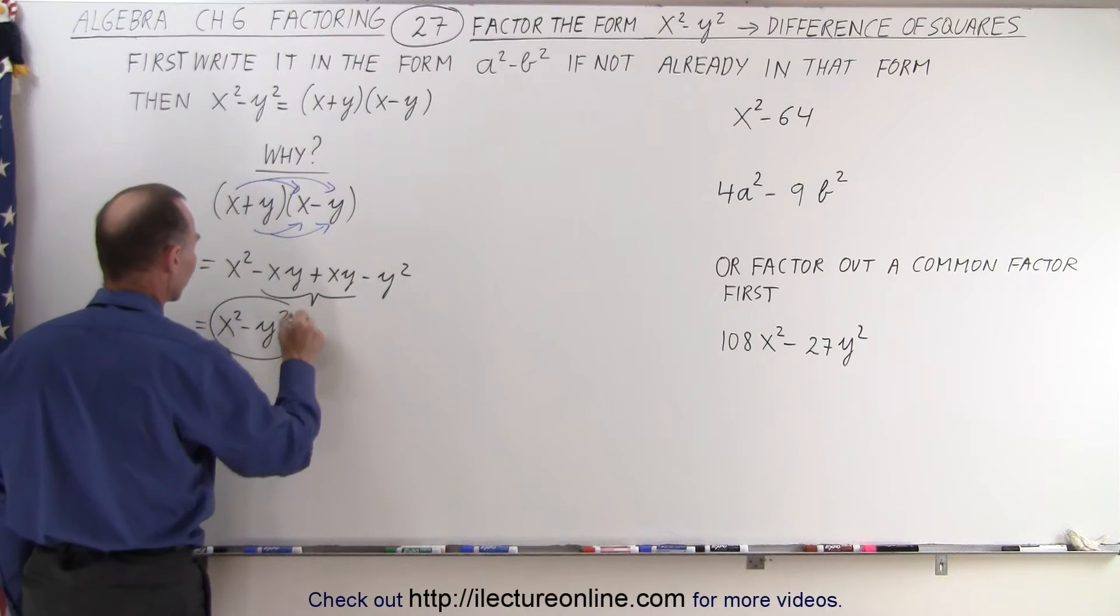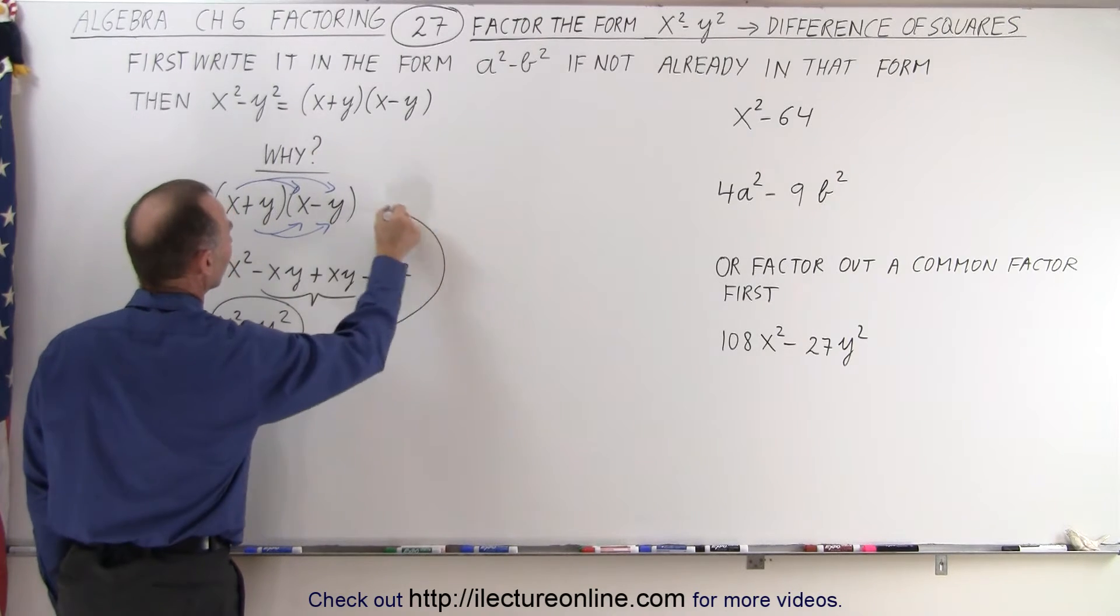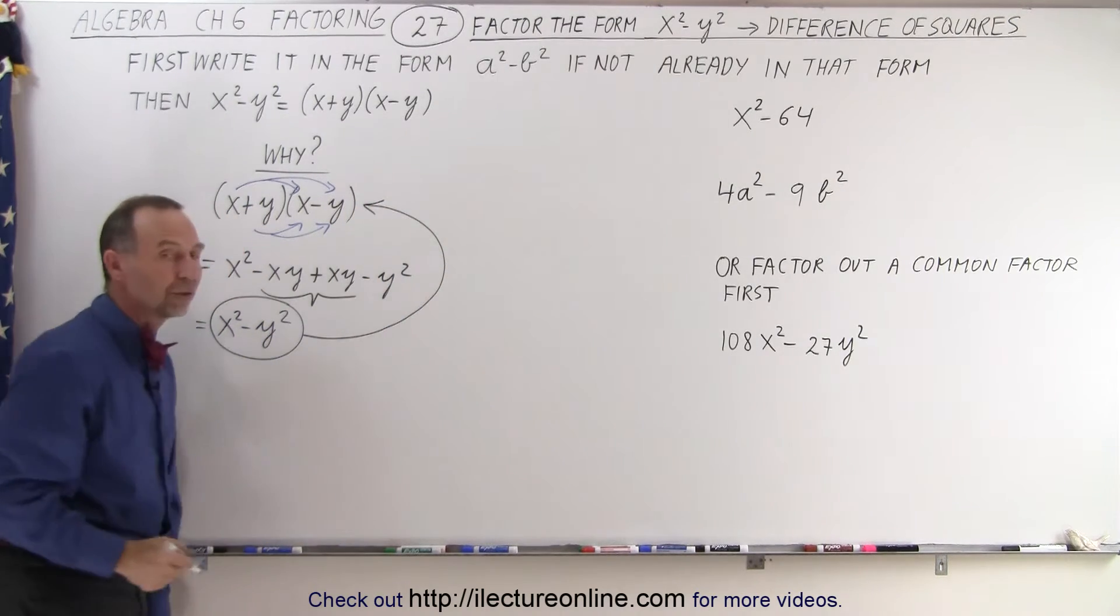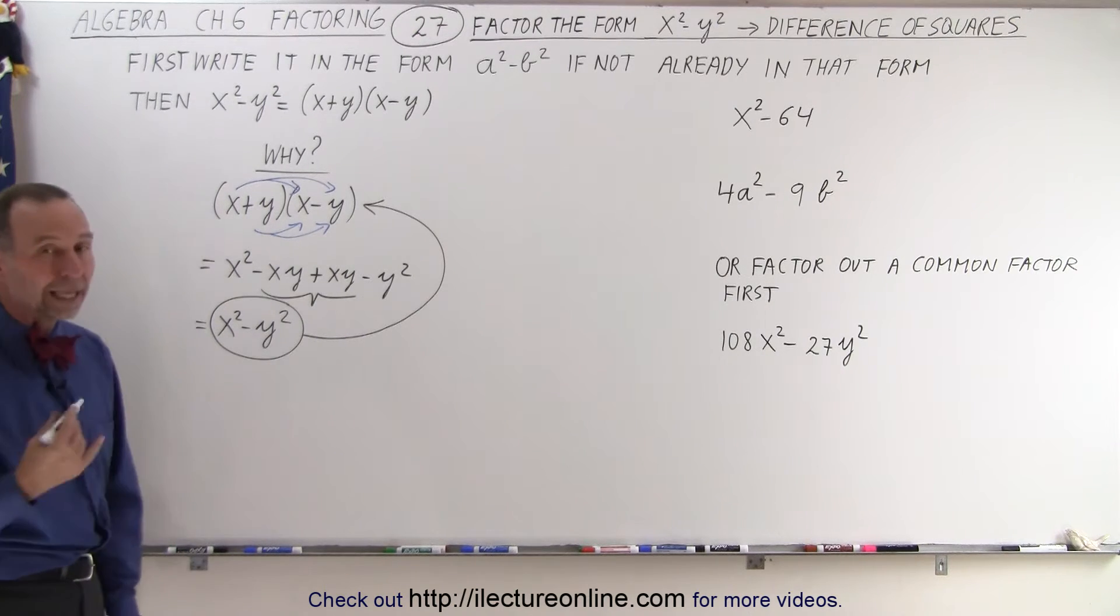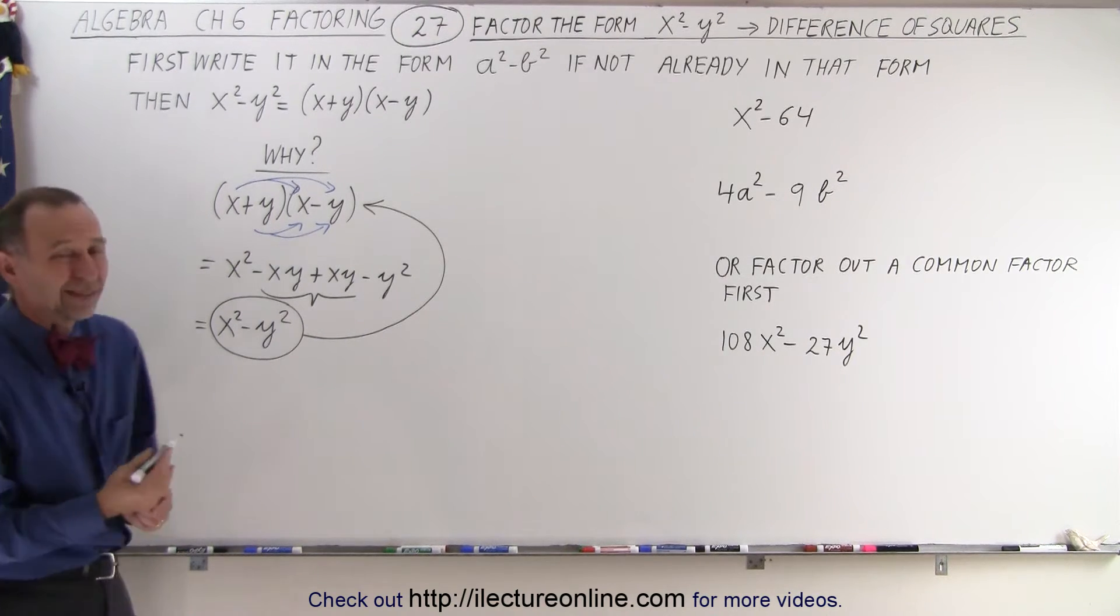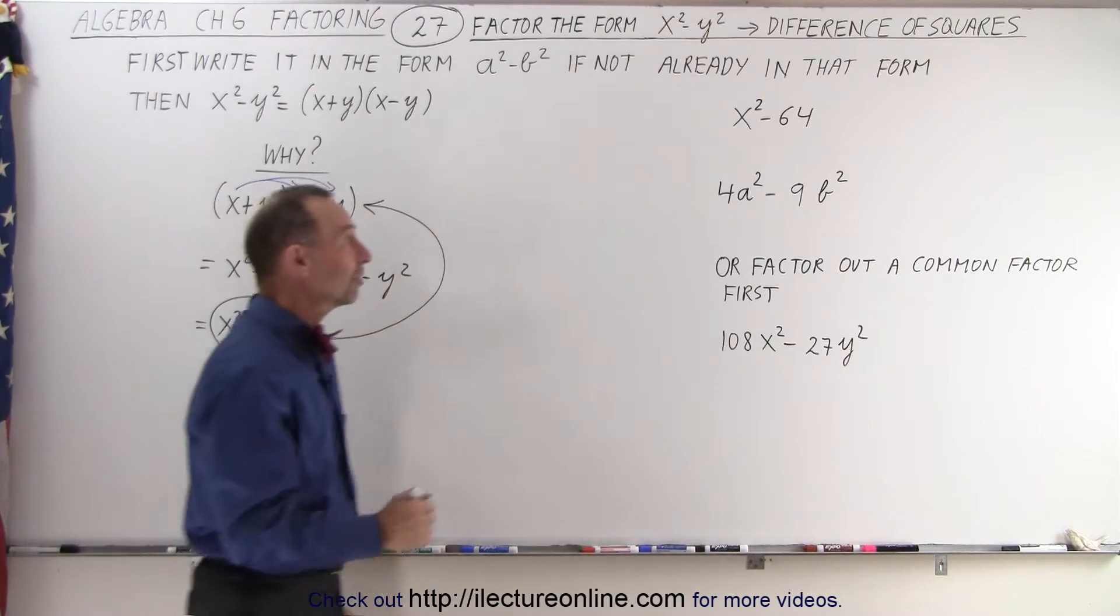And that is why when we have the difference of squares, we now know that we can simply factor it to be equal to that. But sometimes, like I said, we get it in a form where it doesn't look like the difference of squares, but it actually is. For example,